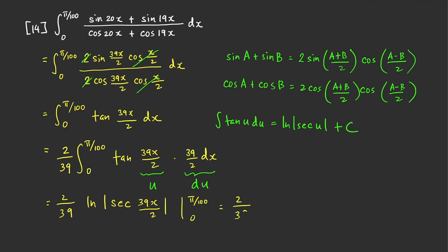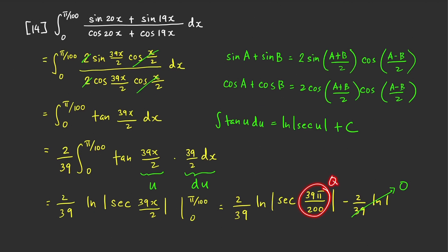This equals (2/39)·ln|sec(39π/200)| minus (2/39)·ln|sec(0)|. Since sec(0) equals 1, ln(1) equals 0, so the second term vanishes. Since the angle 39π/200 is in quadrant 1, secant is positive there, so we can remove the absolute value. Our final answer is (2/39)·ln(sec(39π/200)). We cannot give an exact value since this is not a special angle.